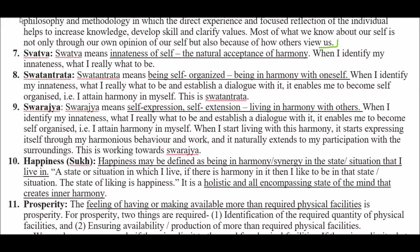Next term is 'Svatva.' Svatva means innateness of self — the natural acceptance of harmony. When I identify my innateness, I discover what I really want to be. Next term is 'Swatantrita.' Swatantrita means being self-organized, being in harmony with oneself. When I identify my innateness and establish a dialogue with it, it enables me to become self-organized — that is, I attain harmony in myself. This is Swatantrita.